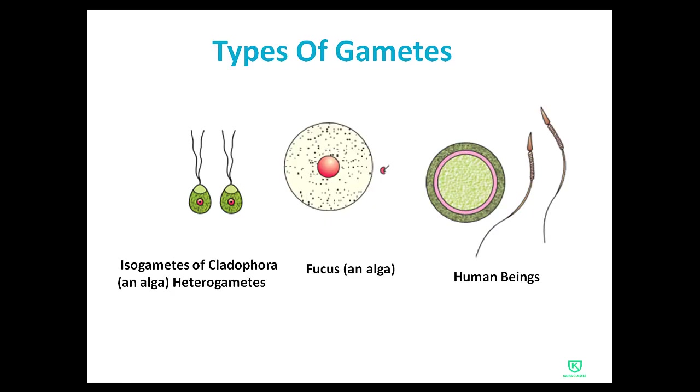Now let's look at the types of gametes. The isogametes of Cladophora and other algae are shown — these two gametes are morphologically and physiologically similar.